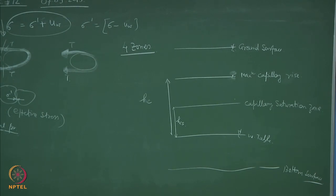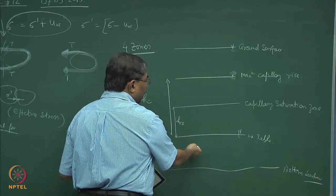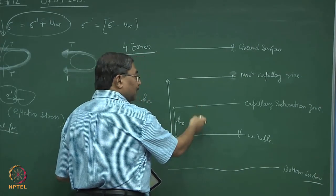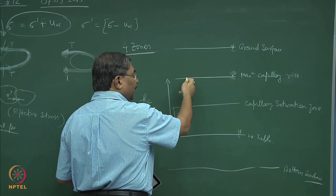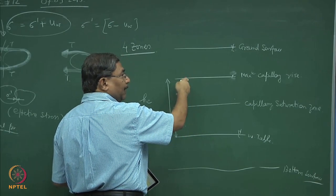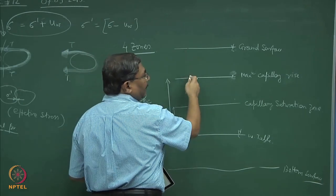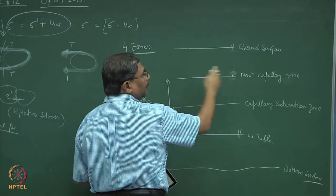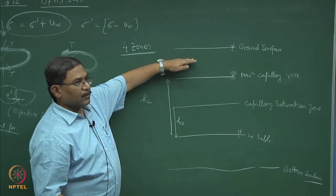What are the peculiar characteristics of these zones? Below the water table, everything is saturated. Here, everything is saturated because of capillary action. Here also the material might be saturated, or might be partially saturated. From here to here it is a dry state because capillarity has no effect on this zone.